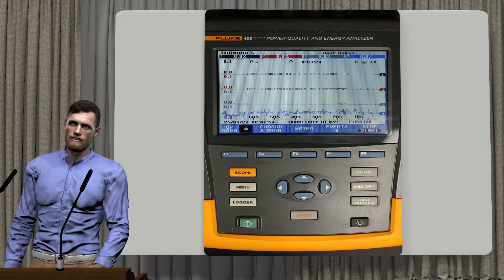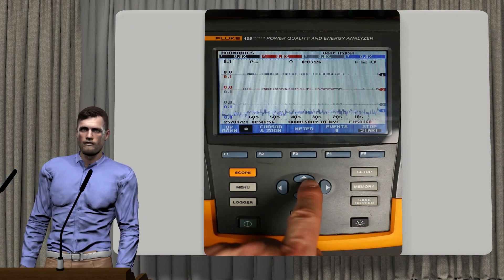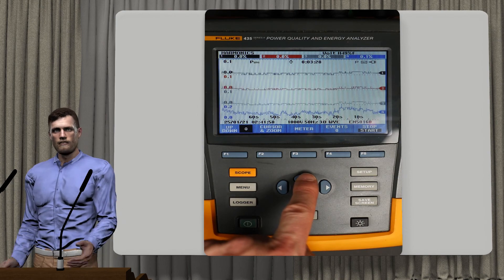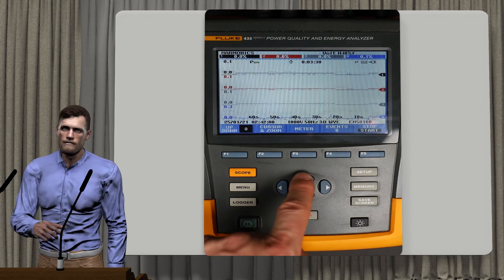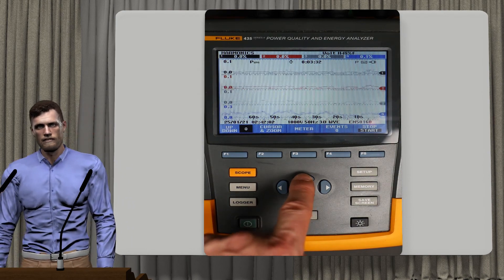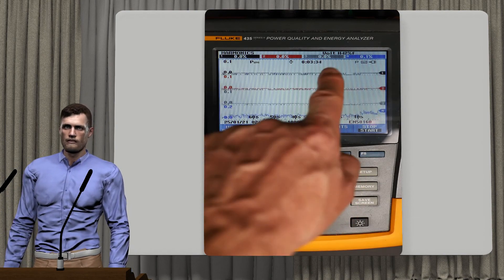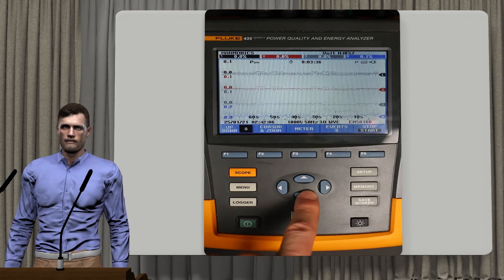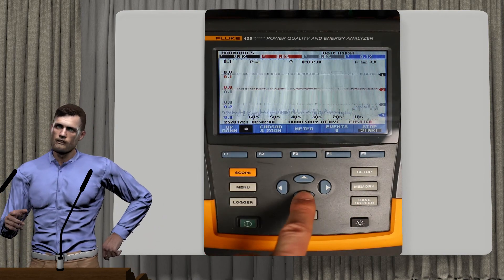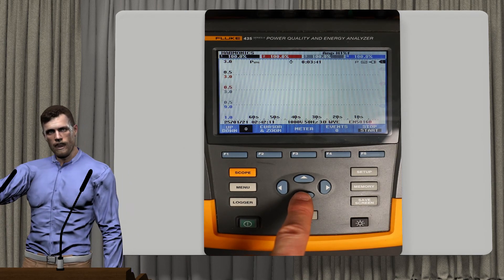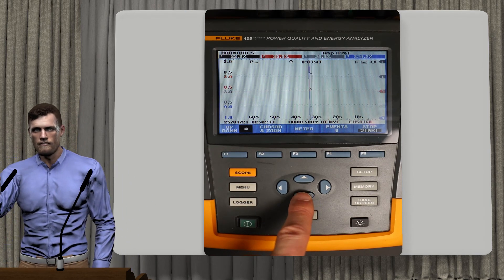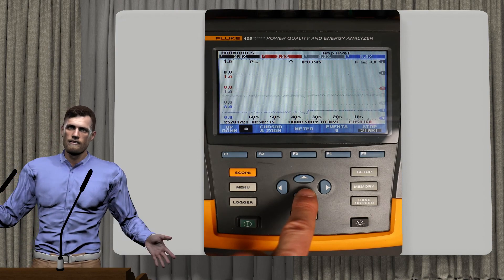As we can see, an analyzer like the Fluke 435 allows us to carry out a simple analysis based for example on the THD, but it also allows us a deep analysis with temporary records of voltages, currents, frequency, k-factor and of course each of the voltage harmonics, current and even power harmonics, an aspect that few analyzers are capable of performing.